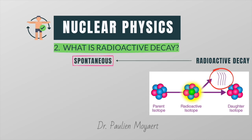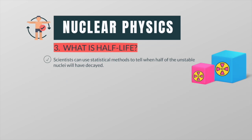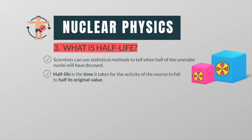Radioactive decay is a spontaneous and random process. It means that it is not possible to say which particular nucleus from a block of radioactive material will decay next. But given that there are so many of them, it is possible to say that a certain number will decay in a certain time. Scientists can use statistical methods to tell when half of the unstable nuclei will have decayed. This is called the half-life. Half-life is the time it takes for the activity of the source to fall to half its original value.